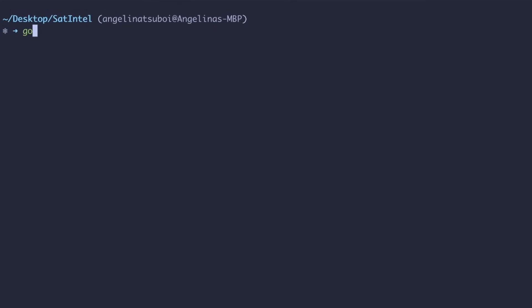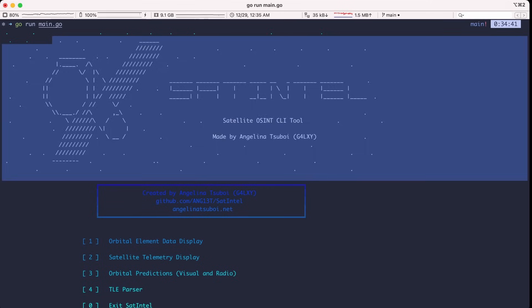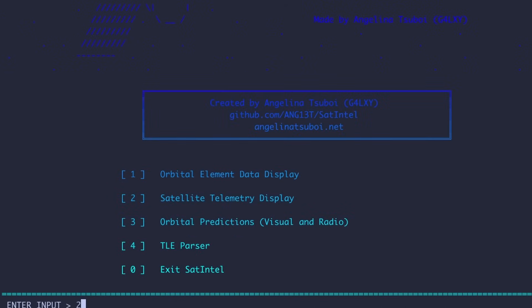Then you can open up a terminal instance and type in git clone and paste in the GitHub URL repository. Once you have that installed, you can cd into Satintel. In order to run Satintel, you can type in go run main.go. And once you type that in, you should be presented with this banner display here.